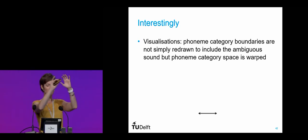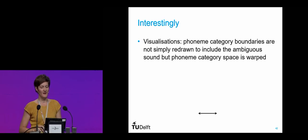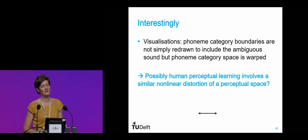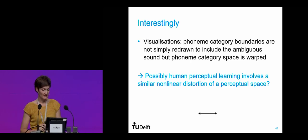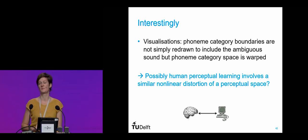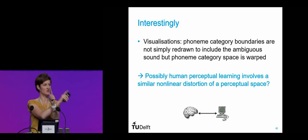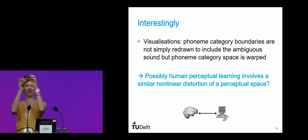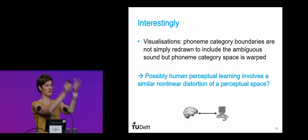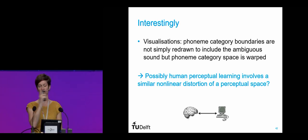Interestingly, the visualizations show that phoneme category boundaries are not simply redrawn to include the new ambiguous sound into an existing category. Rather, we see a warping of the phoneme category space — a shift. This is not what is currently assumed to be the case for human speech processing, so it might be that human perceptual learning also involves a similar non-linear distortion of the perceptual space rather than the simple redrawing people have been thinking about. I'm currently setting up experiments to test that hypothesis with human listeners, going back from ASR to human speech processing — closing the loop.